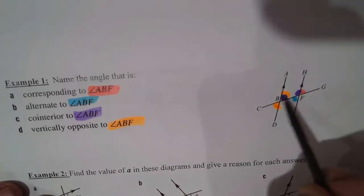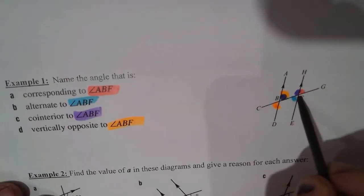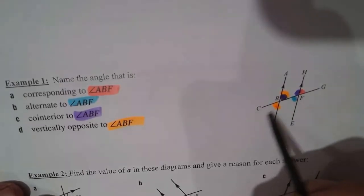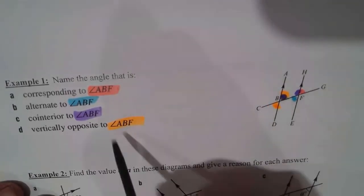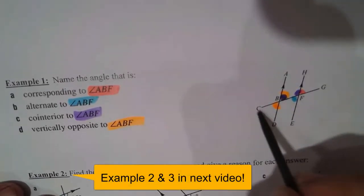So a vertically opposite angle is also equal to whatever this is in degrees ∠ABF. That's going to be the same degrees for angle. Got to write the angle symbol. C, B, D, D, B, C angle.